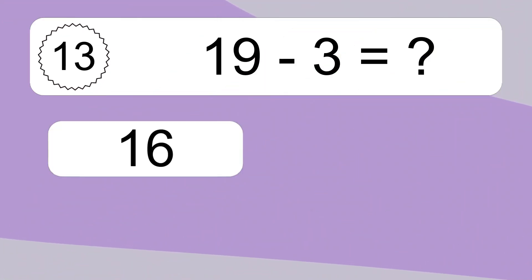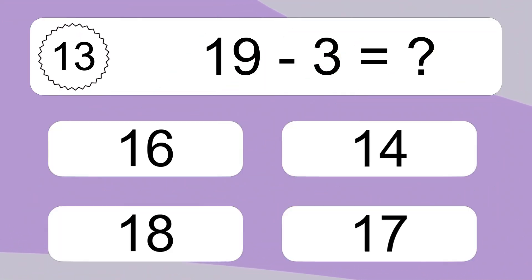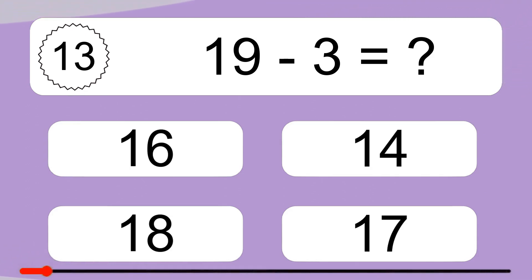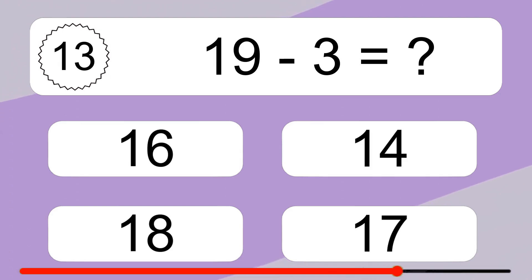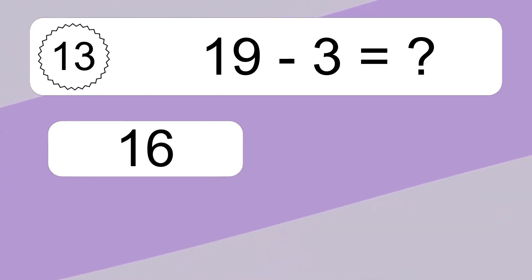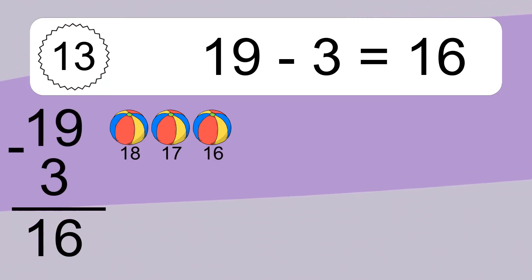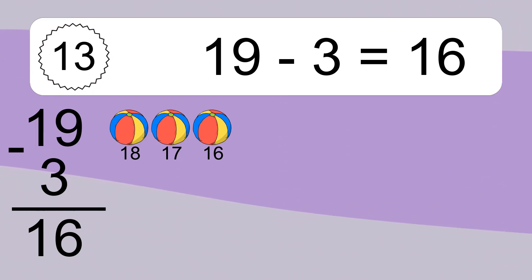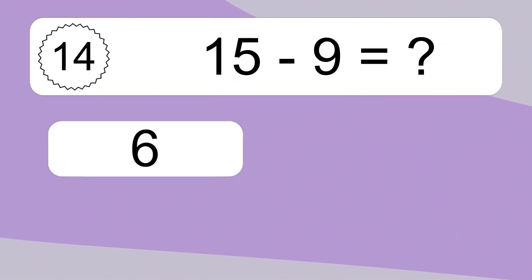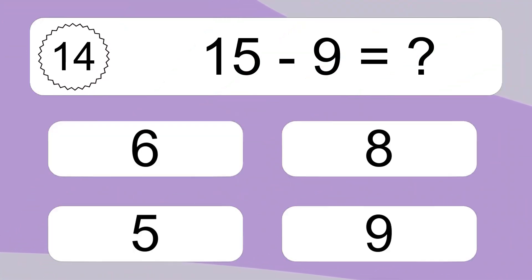19 minus 3 equals what? 19 minus 3 equals 16. Let's count it: 18, 17, 16.